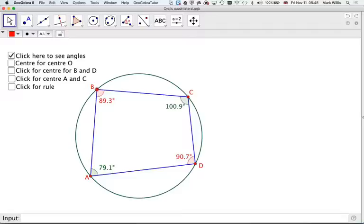Now, why is that so? Let's have a look at the center. So that's the center of the circle. Let's have a look at angles B and D, the red ones.